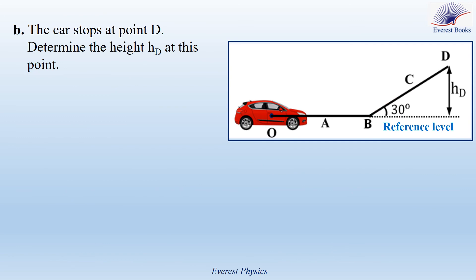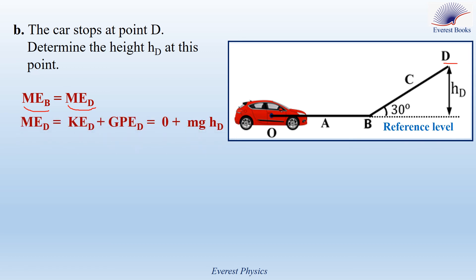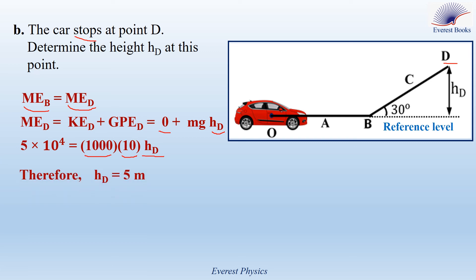Part 3B: The car stops at point D. Determine the height HD at this point. Since mechanical energy is conserved along the inclined plane BCD, we apply conservation of mechanical energy between B and D: MEB = MED. MED = KED + GPED = 0 + mgHD, since the car stops at D. Substituting MEB = 5 × 10⁴ joules, m = 1000 kg, and g = 10 m/s², we get HD = 5 meters.